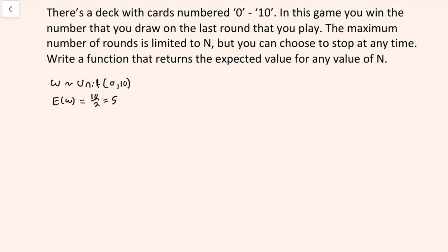Now I'm going to think through what happens on a couple of rounds to see if there's any pattern. On the first round, we draw some winnings, and the expected winning on this single round is 5, since we only draw once. So the expected value of this game, if we only have one round, has to be 5.